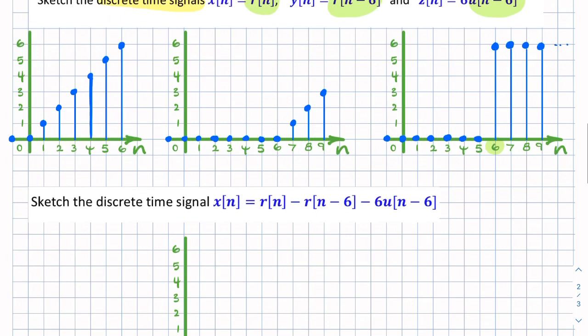The next signal, or the next question, gives you this composite function where you have r[n] minus r[n-6] minus 6u[n-6]. So you notice that this happens to be that, that's that, and that's that function. So we're simply subtracting these three functions.